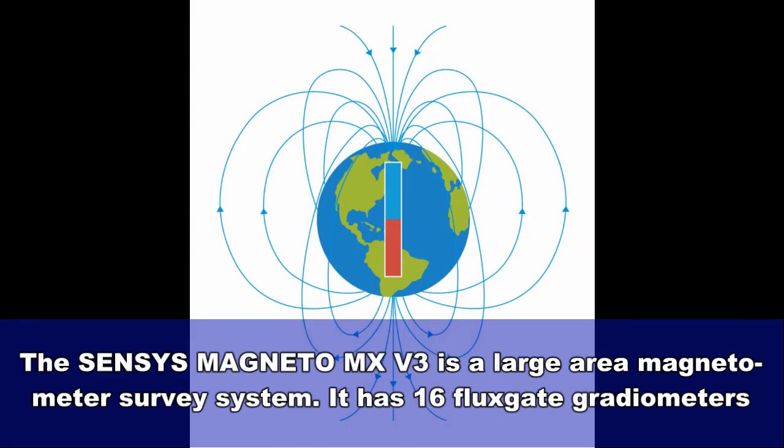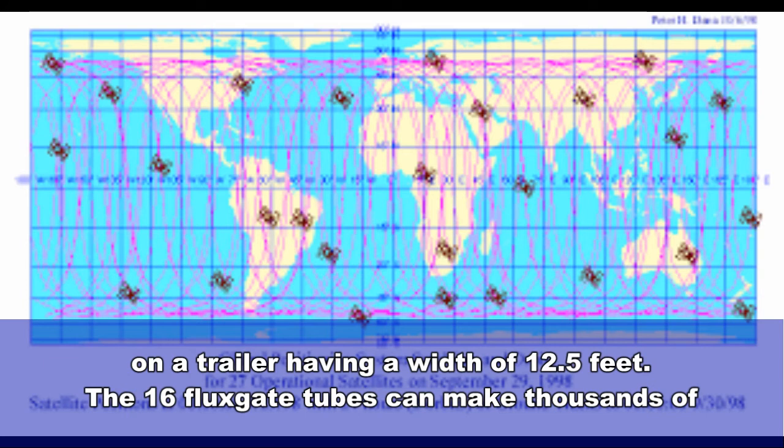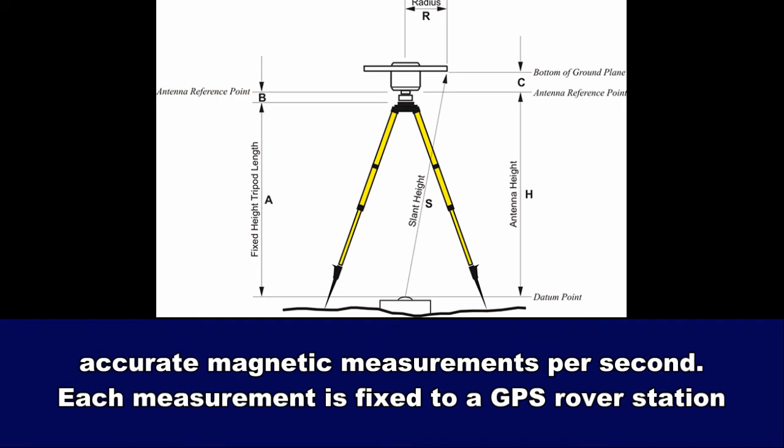The SENSI Magneto MX V3 is a large area magnetometer survey system. It has 16 fluxgate gradiometers on a trailer having a width of 12.5 feet. The 16 fluxgate tubes can make thousands of accurate magnetic measurements per second.